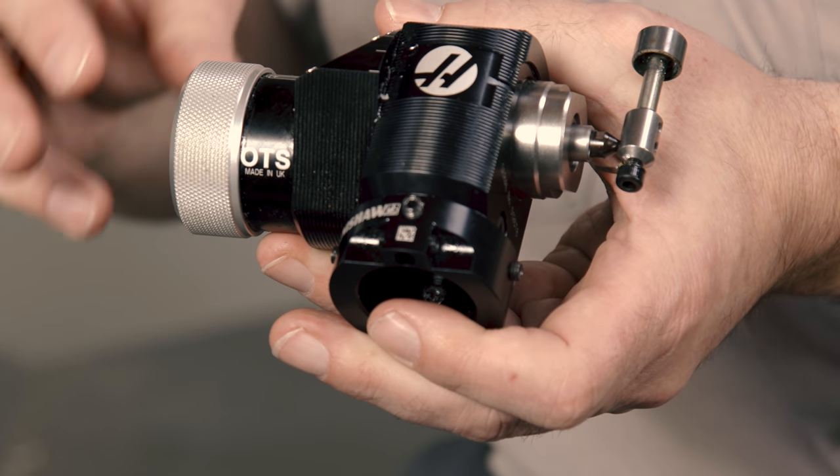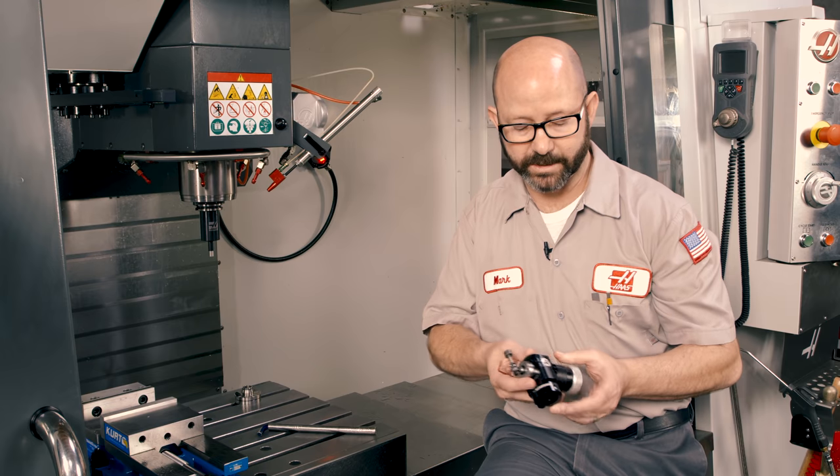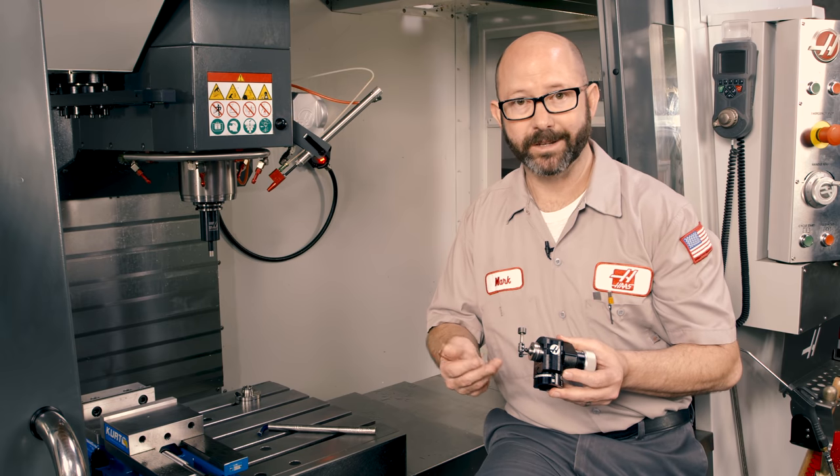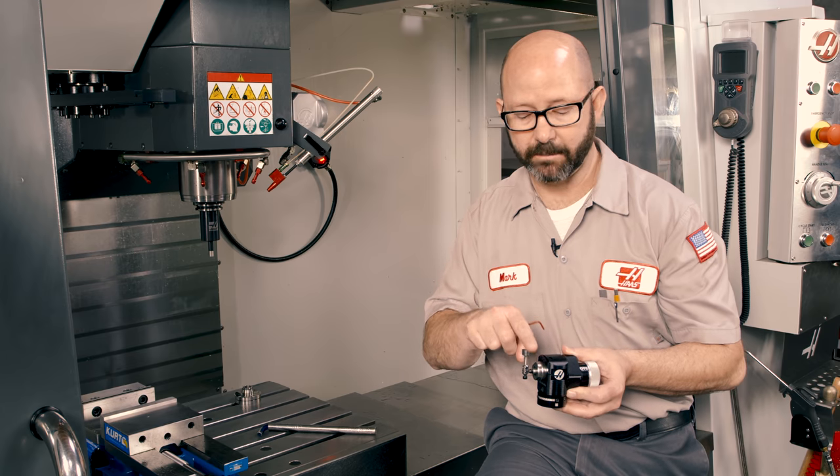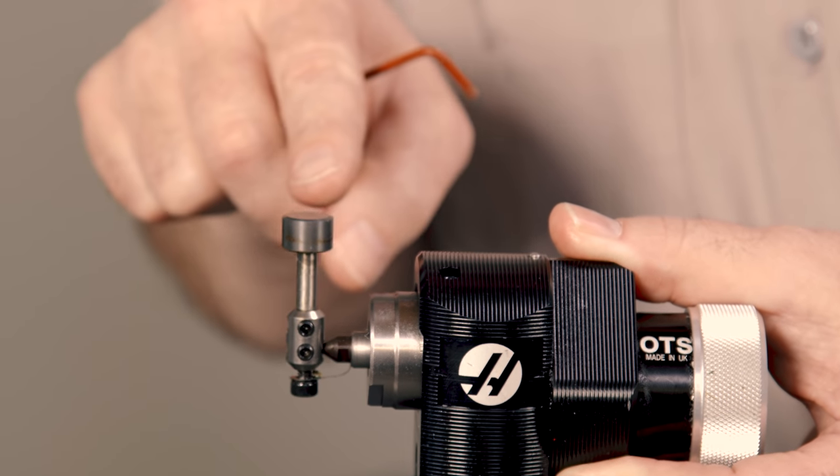Once those are all loosened up, the whole unit just pops right off. Now, anytime you pull off your table probe and put it back on, you've got to recalibrate this thing.